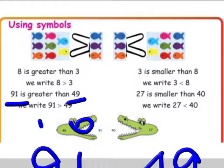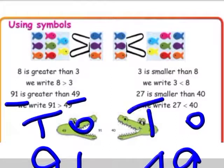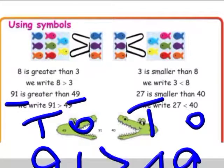Looking at the ones place and tens place: in 91, the tens place digit is 9. In 49, the tens place digit is 4. Since 9 is greater than 4, 91 is greater than 49.